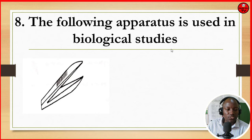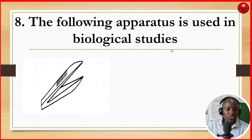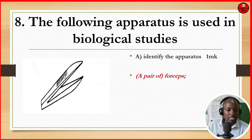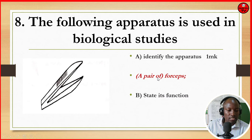The following apparatus is used in biological studies. Identify the apparatus — it is a pair of forceps. State its function: it is used for picking up or holding specimens in the lab.